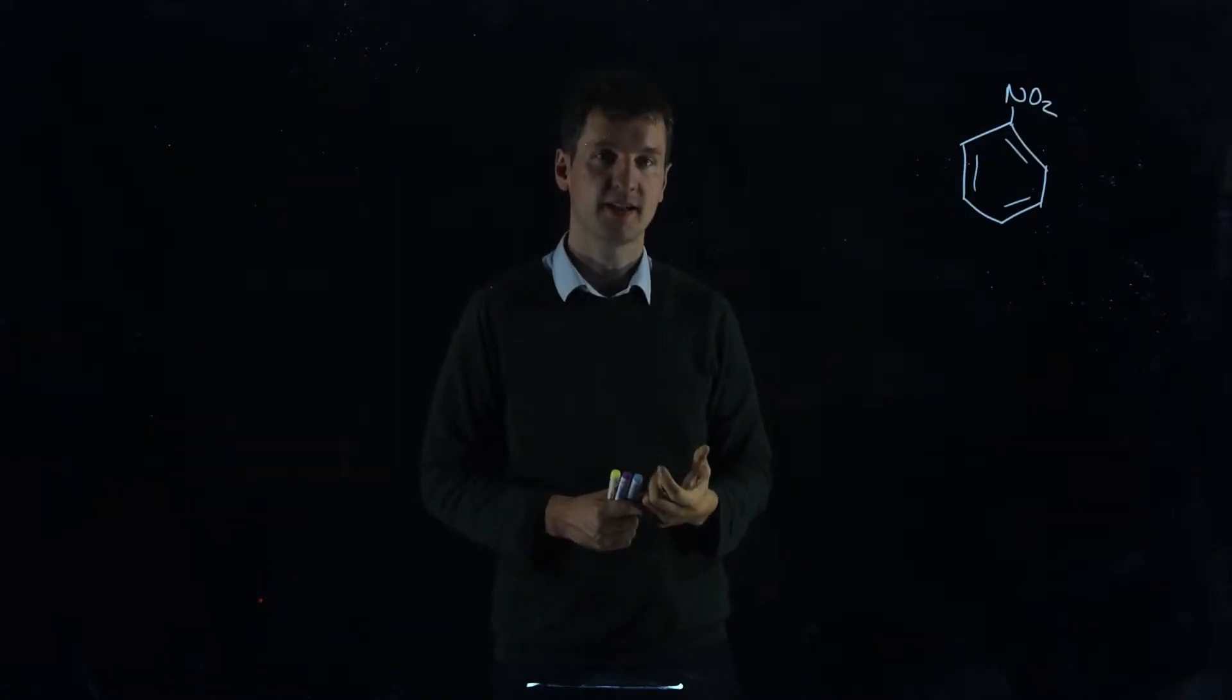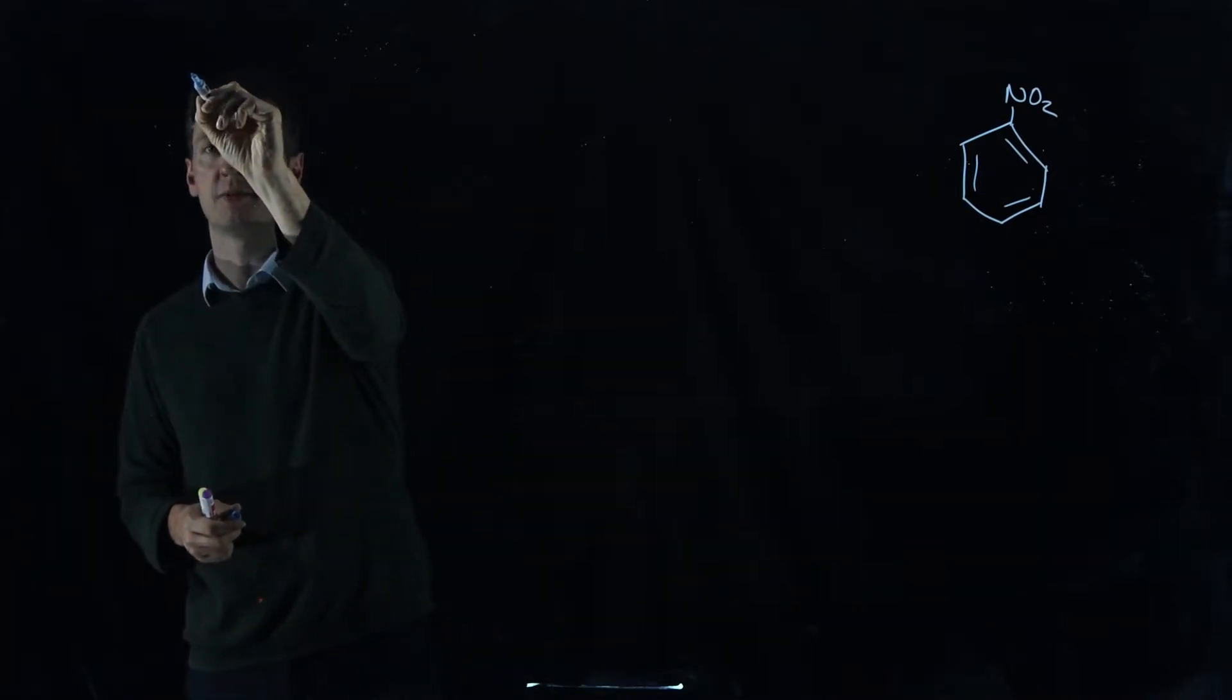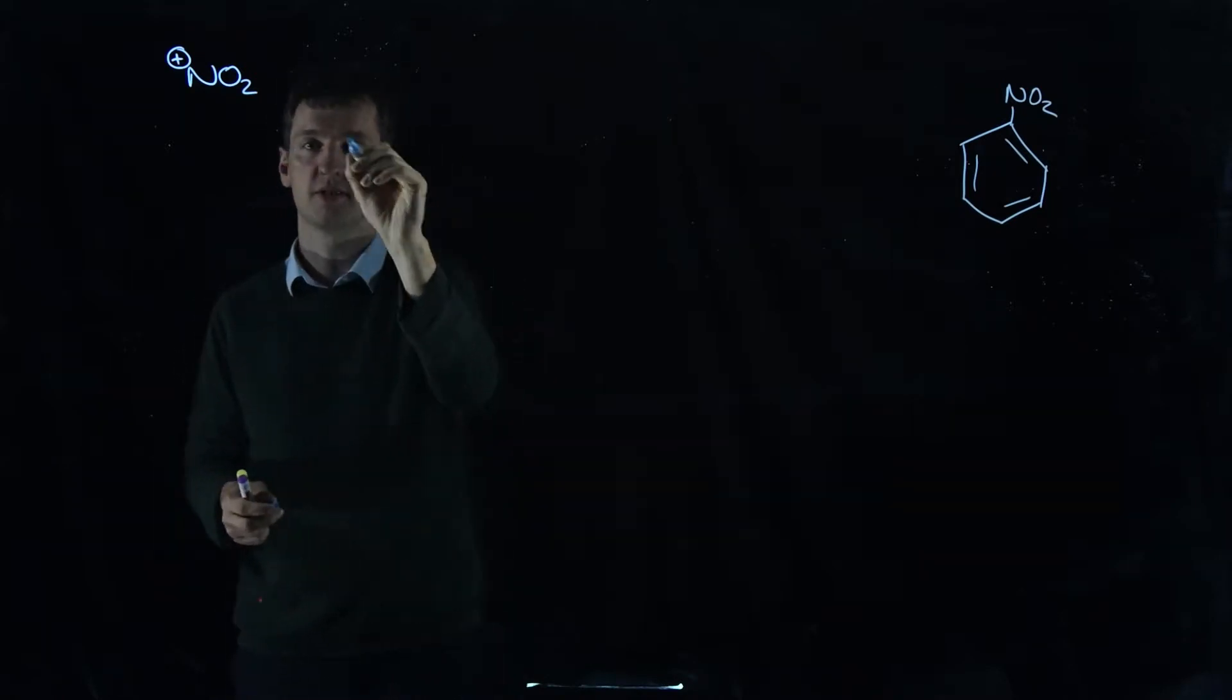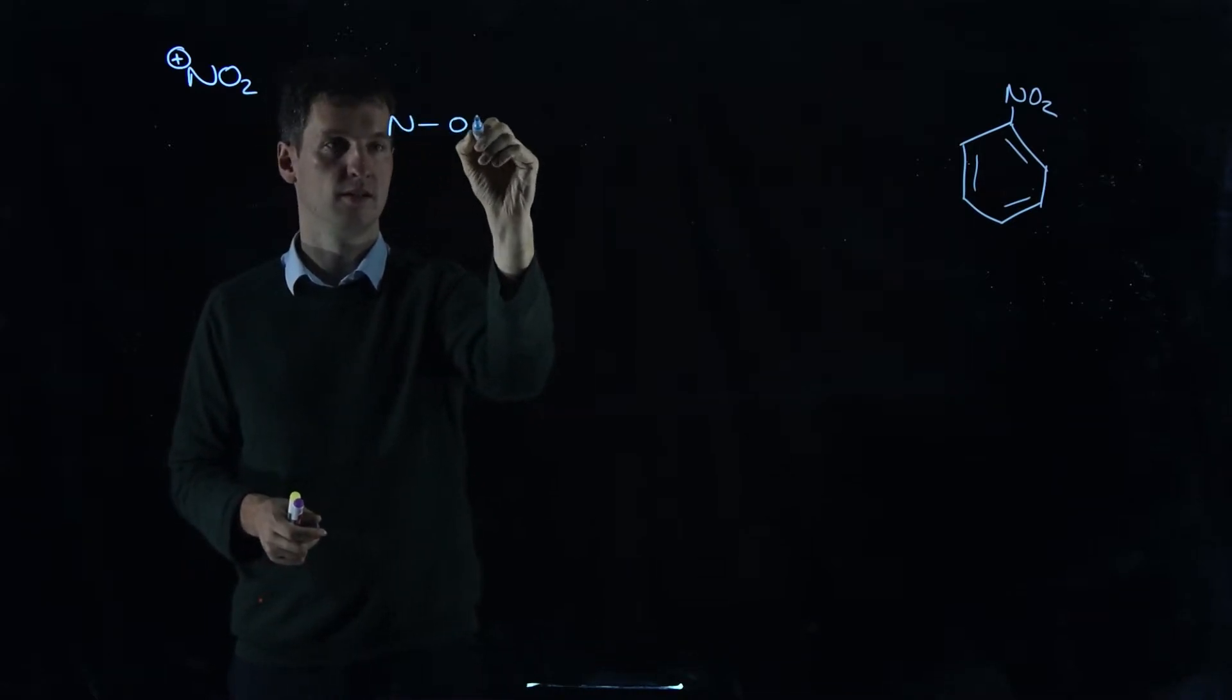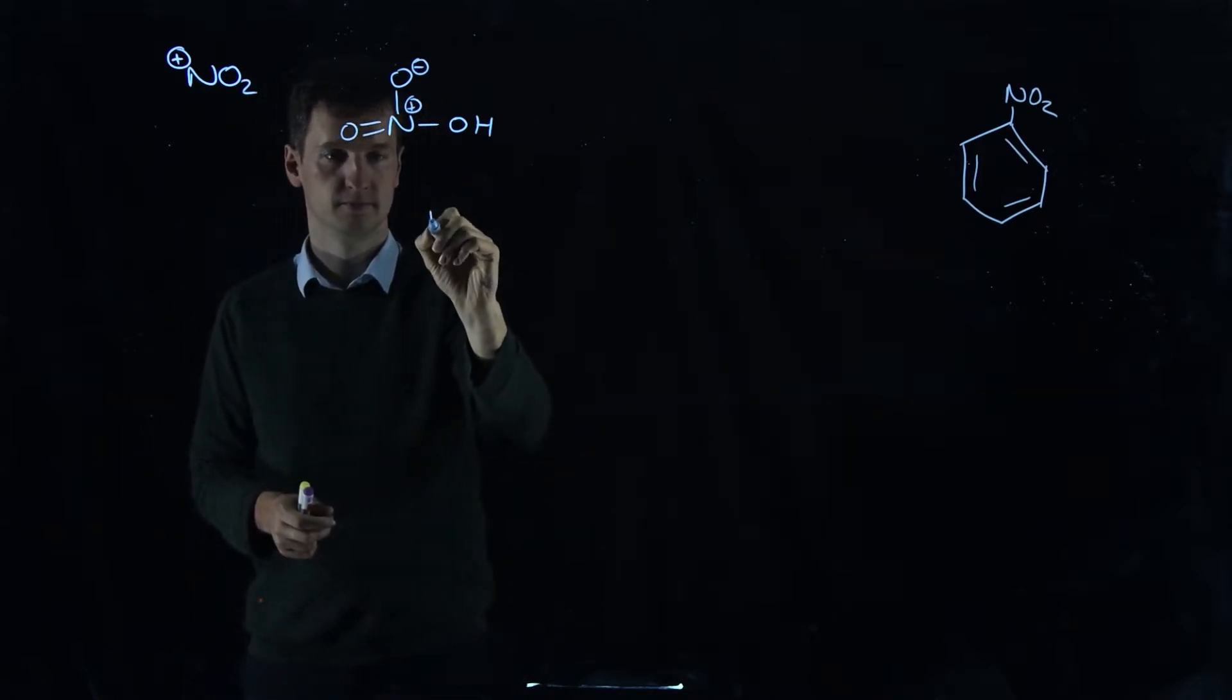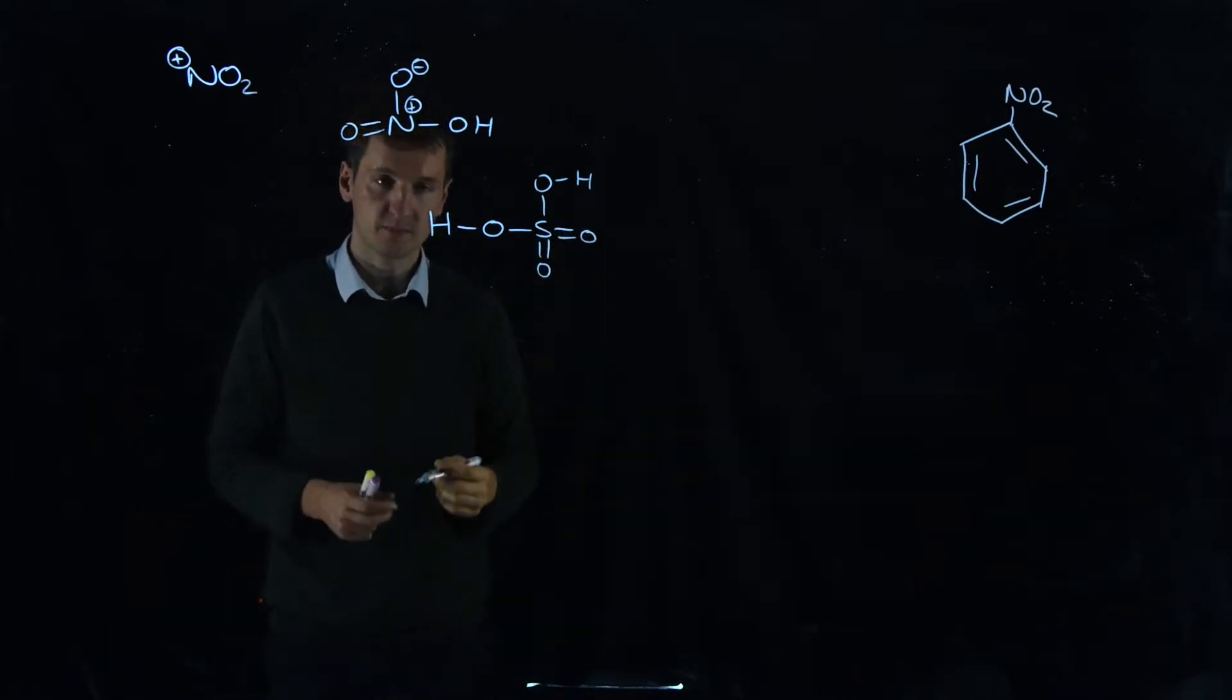Okay, let's look at a specific example. Our specific example is going to be nitrobenzene where we've substituted one of the hydrogens for a nitro group. To make that happen, we're going to have to generate a strong electrophile. Our electrophile is going to have to be NO2+. To do that, the usual thing to use, although there are many different possible conditions, are sulfuric acid and nitric acid. So nitric acid is HNO3, and sulfuric acid is H2SO4.